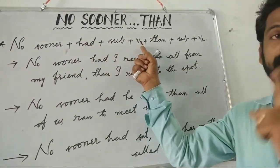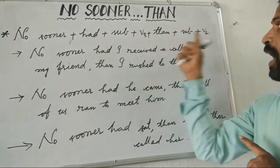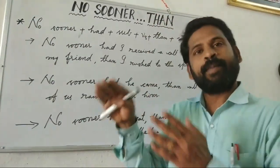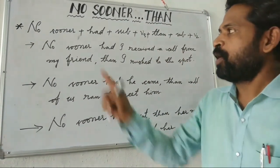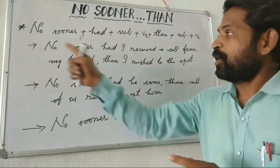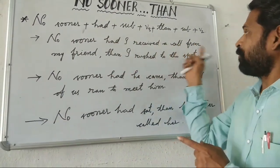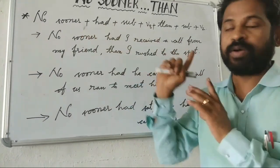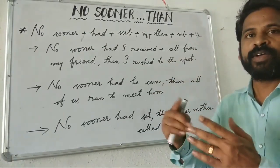With 'had' we use V3. Then subject plus V2 is common. Same sentence can also be expressed using this structure. For example: no sooner had I received a call from my friend — maa frenda kakbiru nunchi — then I rushed to the spot.